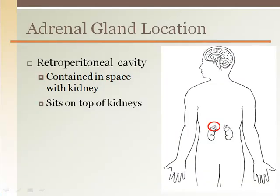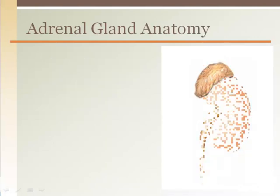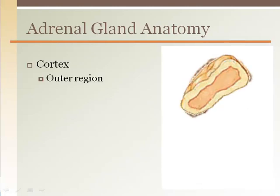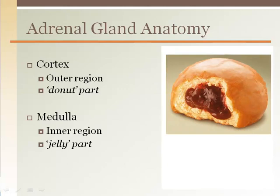The adrenal gland is located inside the retroperitoneal cavity and sits on top of each kidney. The adrenal gland is two glands in one. The adrenal cortex is the outer region or crust, and the adrenal medulla is the middle region. Think of the adrenal gland like a jelly donut, with the inner jelly part being the medulla. Like the donut part of a jelly donut, the cortex goes all the way around.